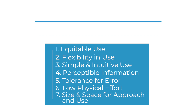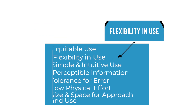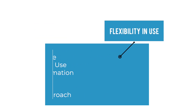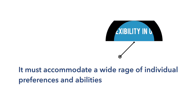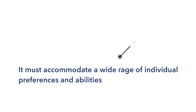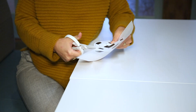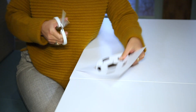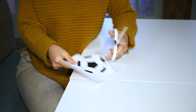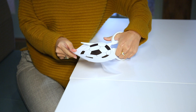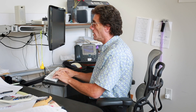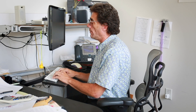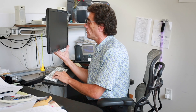Flexibility in use is the second universal design principle. For a design to follow this principle, it must accommodate a wide range of individual preferences and abilities. Scissors that can be used by right- and left-handed users and adjustable desks or tables are examples of this principle in use.